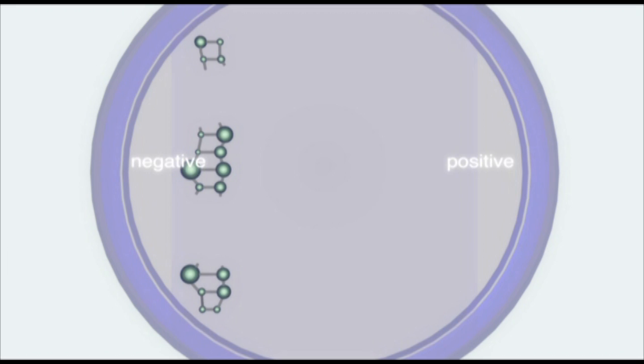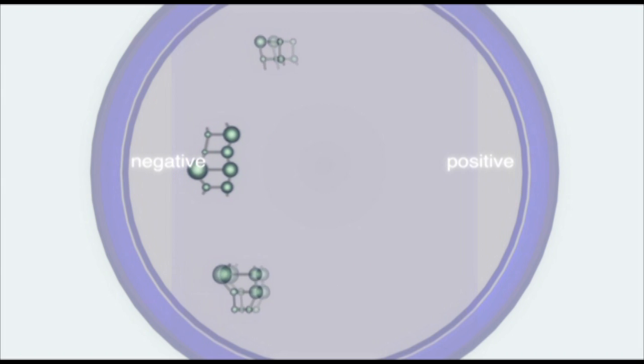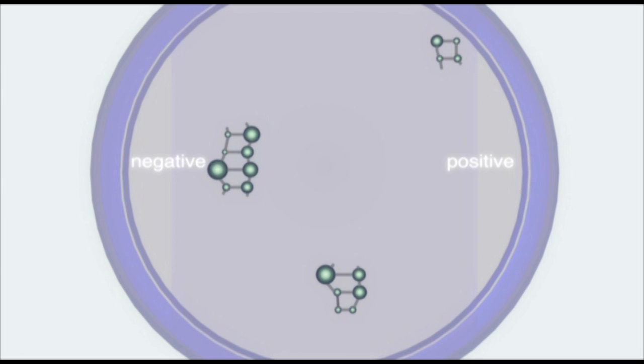DNA molecules have a strong negative charge, so if an electric field is applied to the tray, they'll move toward the positive electrode. Agarose gels have microscopic pores, which act as a filter when molecules attempt to move through them. Smaller molecules will move through the gel more quickly than larger molecules.